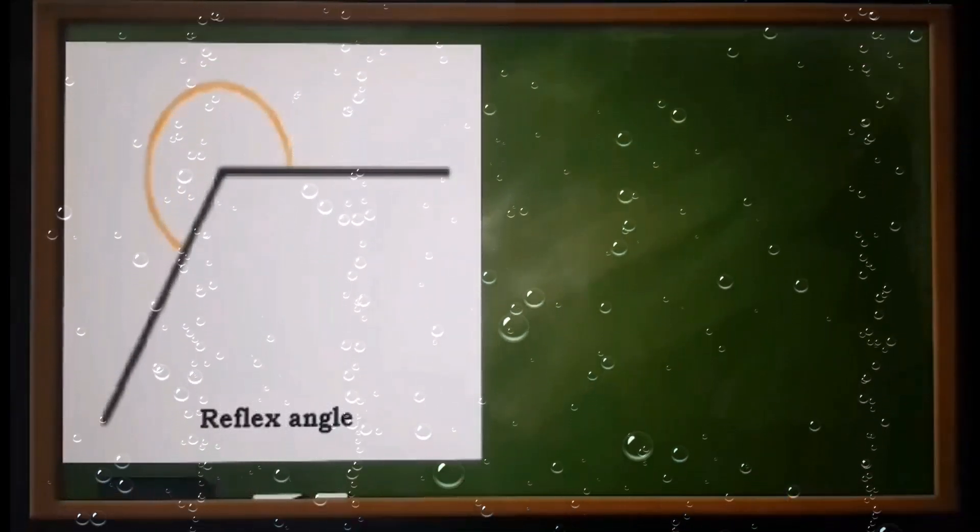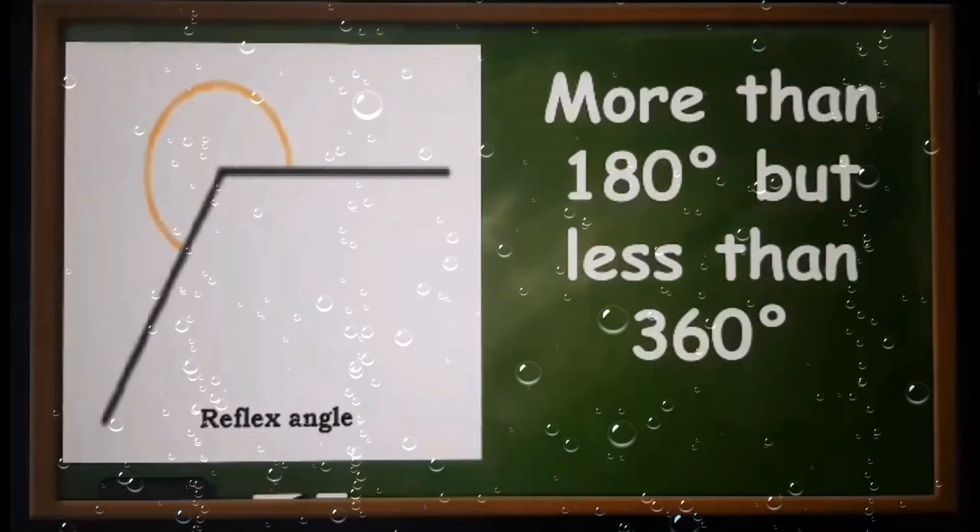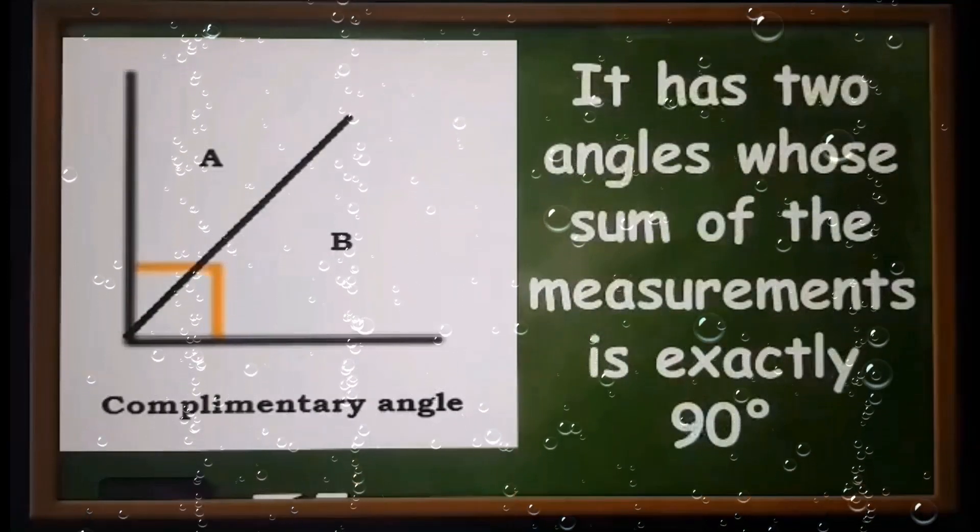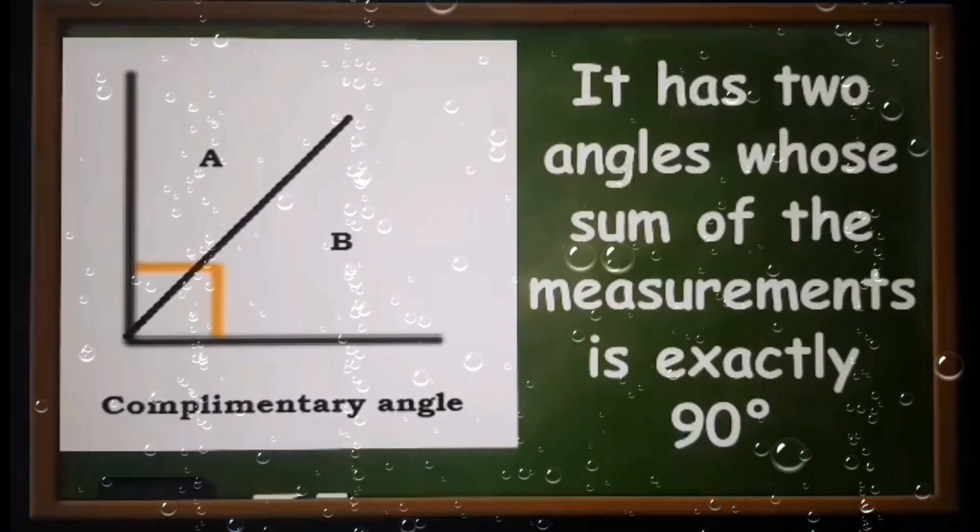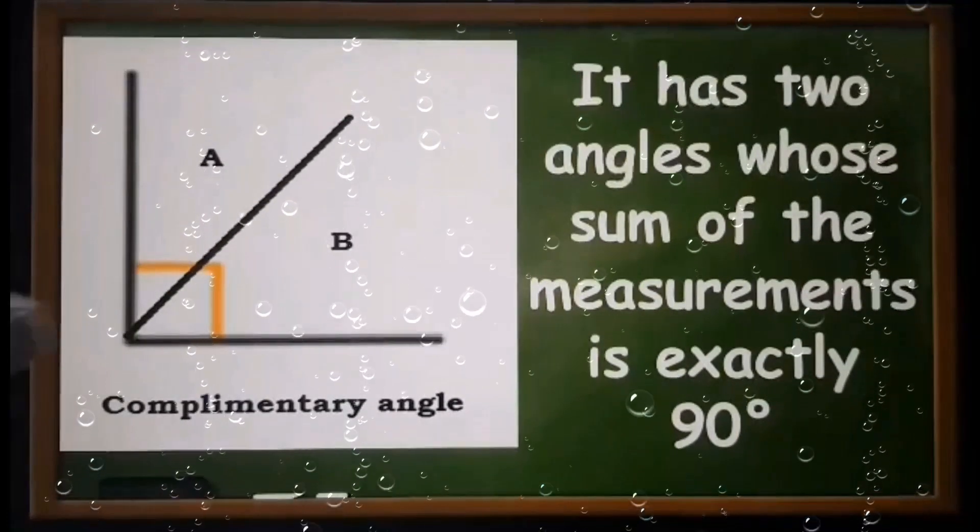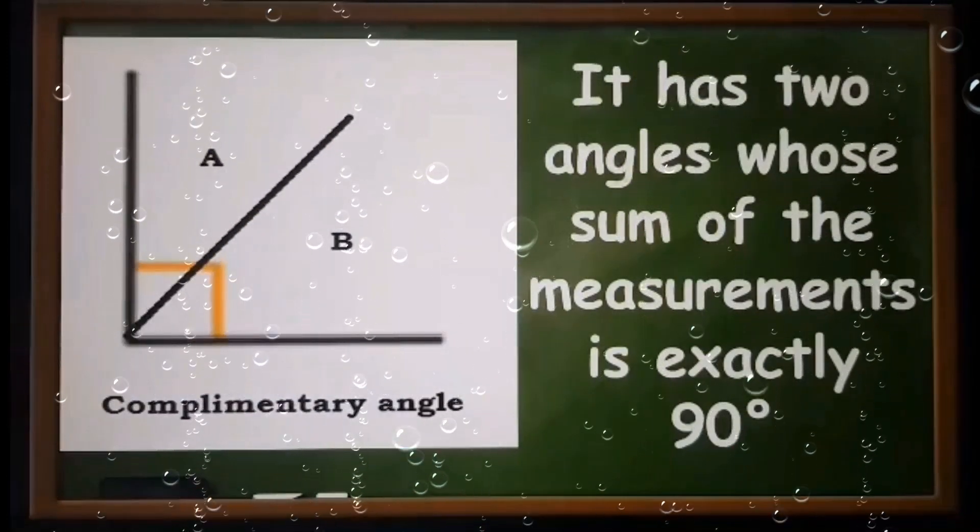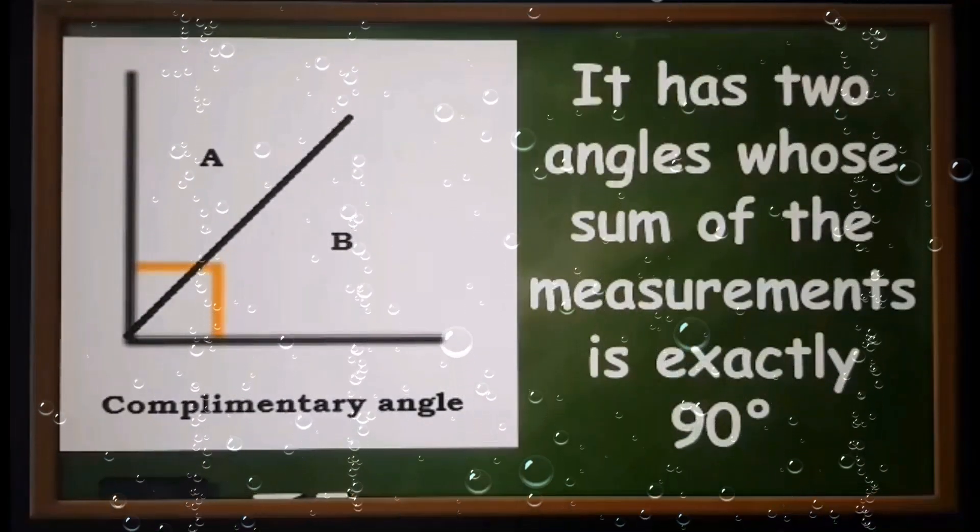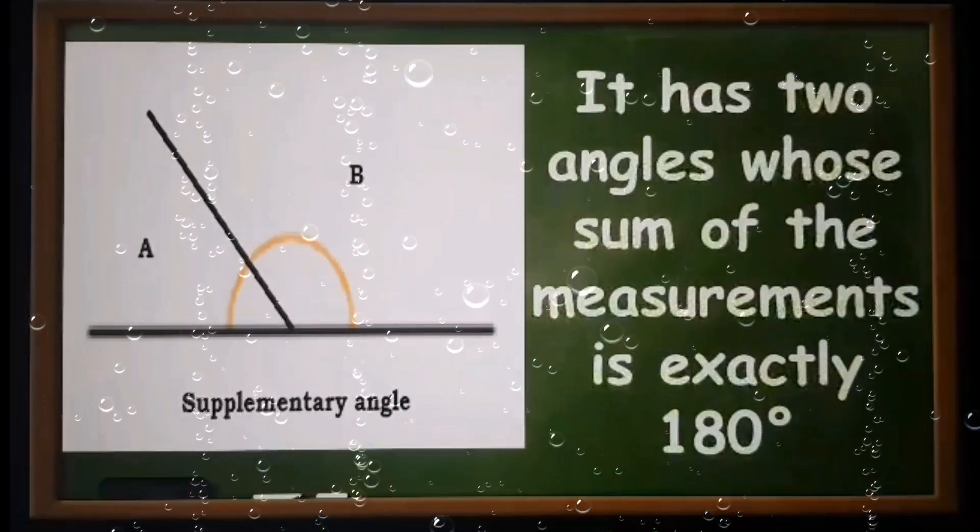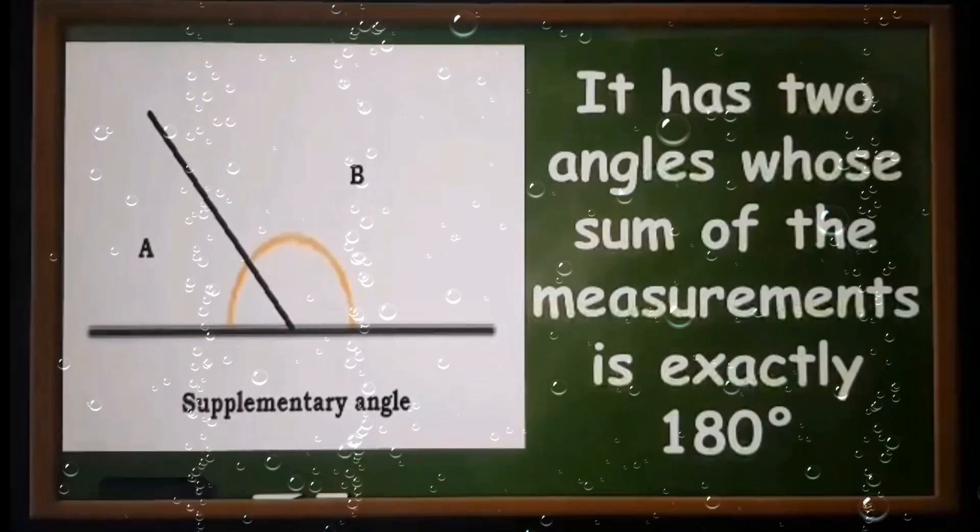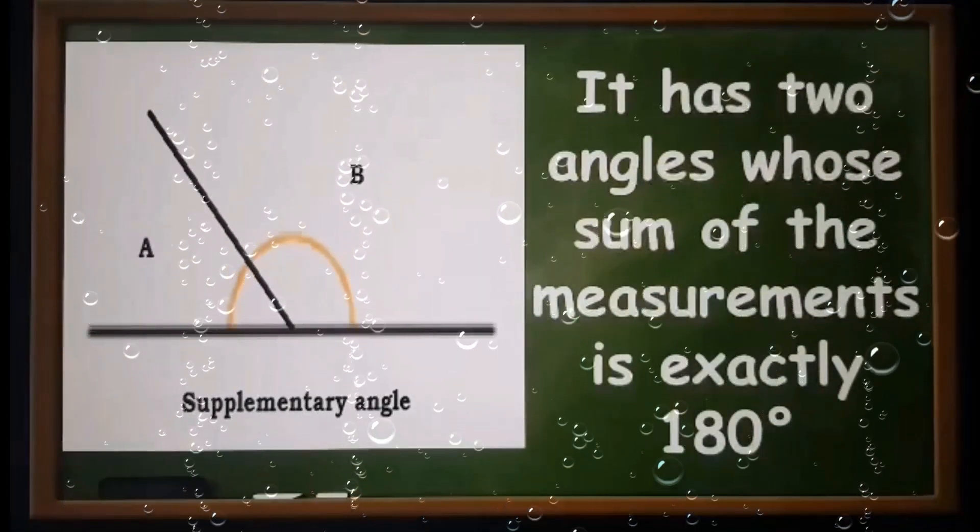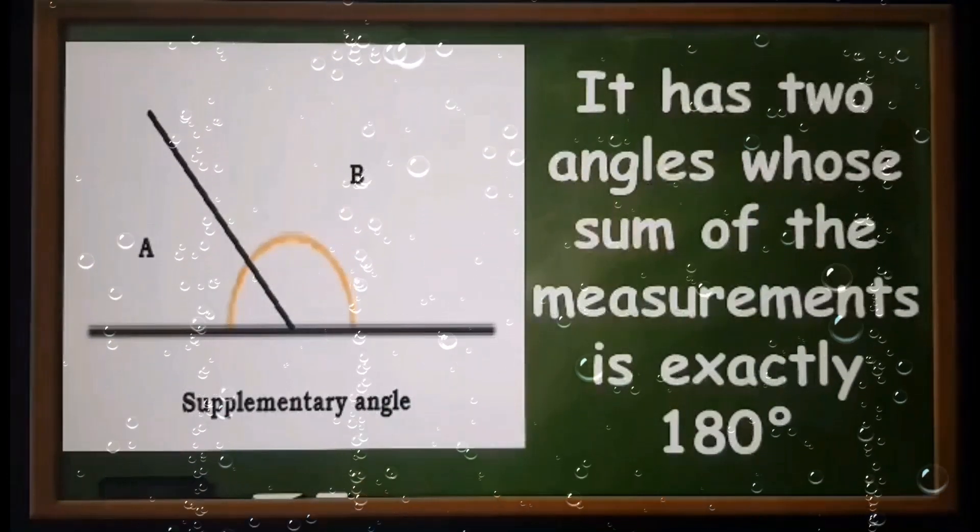Reflex angle: measure more than 180 degrees but less than 360 degrees. Complementary angle: has two angles whose sum of the measurement is exactly 90 degrees. For example, angle A measured 40 degrees and angle B measured 50 degrees, with a total of 90 degrees. Supplementary angle: has two angles whose sum of the measurement is exactly 180 degrees. Let us try angle A. If A is 60 degrees, B is 120 degrees.